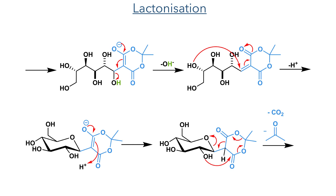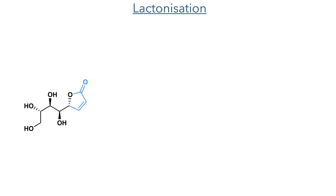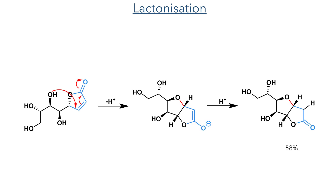The C2-hydroxyl group then attacks Meldrum's acid in a reaction that is driven forward by the elimination of both acetone and carbon dioxide. This forms an alpha-beta-unsaturated lactone that then undergoes conjugate addition from the C4-hydroxyl group. Protonation of the resulting enolate furnishes the product with an overall yield of 58%. This reaction is remarkable as it generates a very complex but stereo-defined product in high yield from very cheap starting materials. The conditions reported in this paper take advantage of microwave heating and were able to complete the same reaction in just two and a half hours.